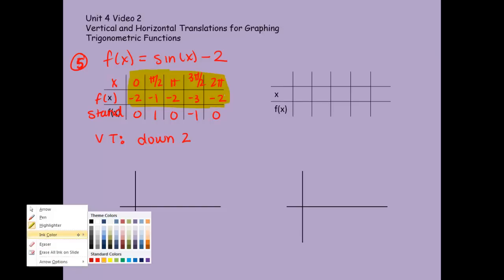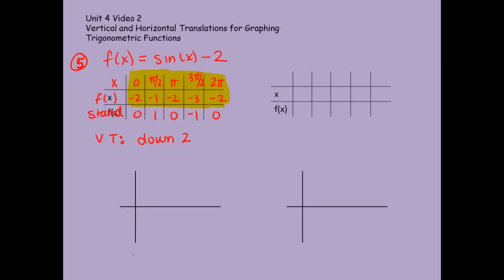I'll grab a different color so you can see. The axes are marked with the standard 1 and negative 1, but our new midline has been moved down to negative 2. So I'm going to put a little horizontal line there to help us graph. I'll mark my x-axis with pi over 2, pi, 3 pi over 2, and 2 pi. Then I graph all those points that were once on the x-axis now on our new axis. And here is our shifted sine curve — it's moved down two spaces.